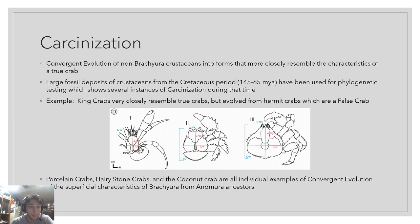So, what is carcinization? It's the massive convergent evolution of Anomura crabs gaining characteristics of Brachyura crustaceans. We know this because crustaceans are marine animals very suitable for fossilization, and we have huge fossil records from the Cretaceous period. Scientists looked at this, did phylogenetic studies, and saw that this process of carcinization from Anomura species has been happening multiple times independently of each other over time.